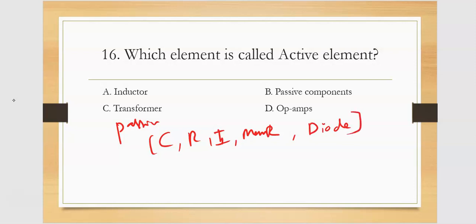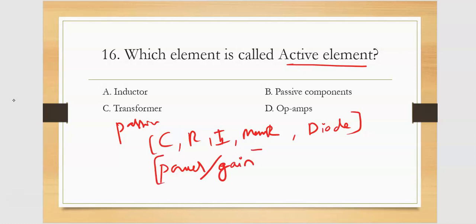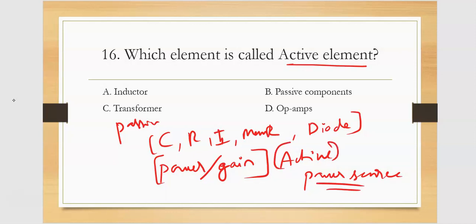Which element is called an active element? The other passive elements are diode, capacitor, resistor, inductor. Now, what is the meaning of active element? An active element is any device or circuit which can increase or change the power — more than the power which is supplied — or has any power gain. If it generates power we call it an active circuit. Any power source is treated as an active circuit. If it generates power it is active; if it consumes it is passive.